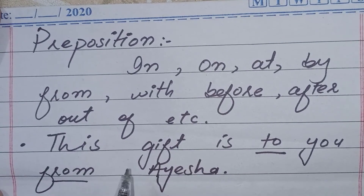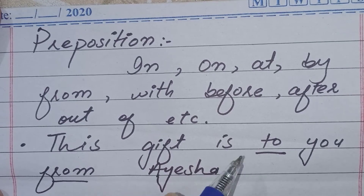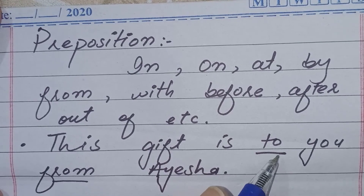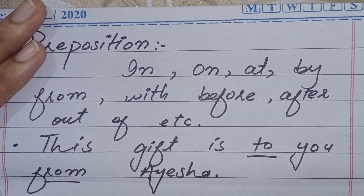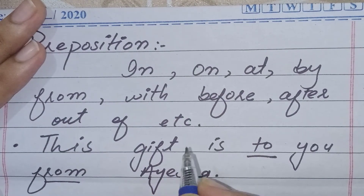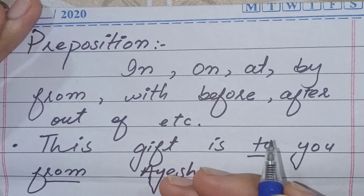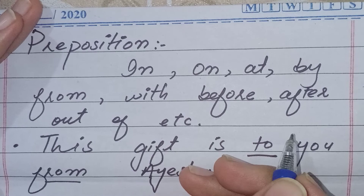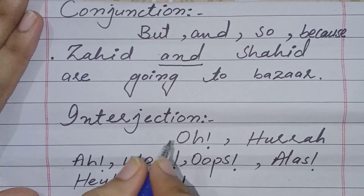For example, in the sentence 'This gift is to you from Aisha,' there are two prepositions: 'to' and 'from.' We can use simple or compound prepositions in a sentence to show place, position, time, or method.